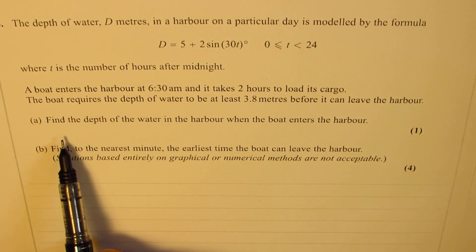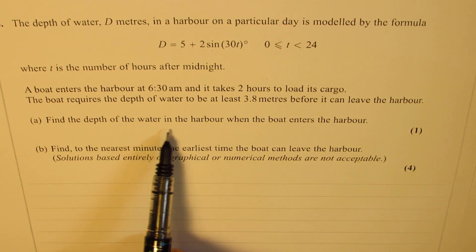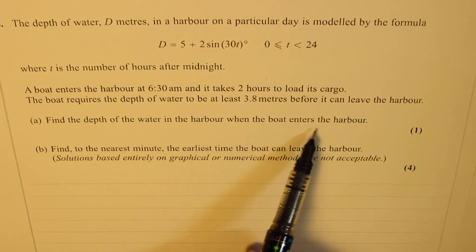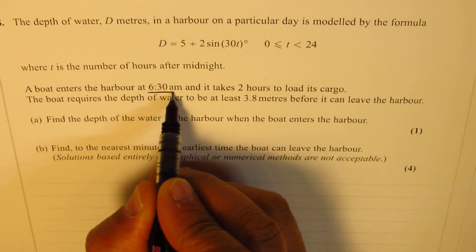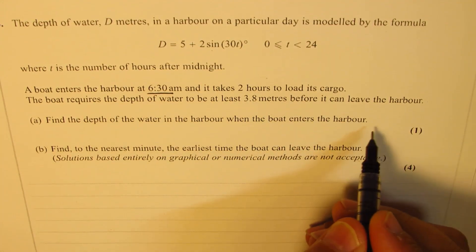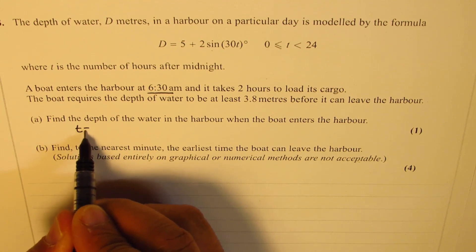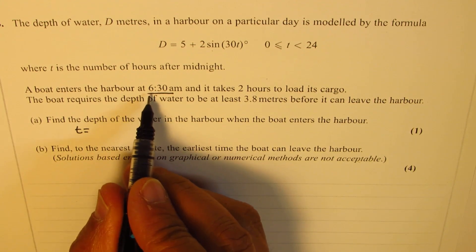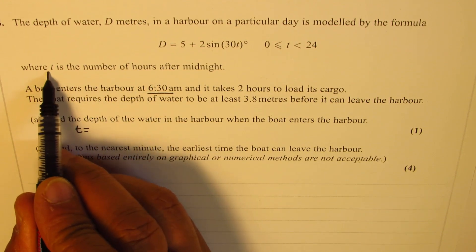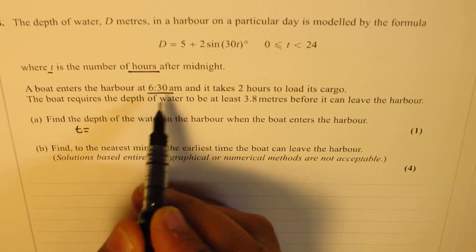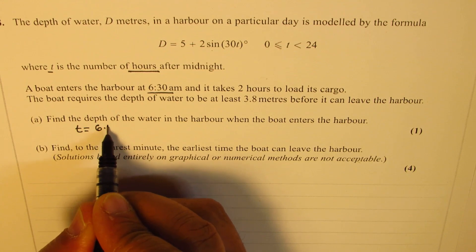So part A, to find the depth of the water in the harbor when the boat enters. That means time t in this case equals 6 and a half hours. Time t is in hours. 6:30 means 6.5 hours.